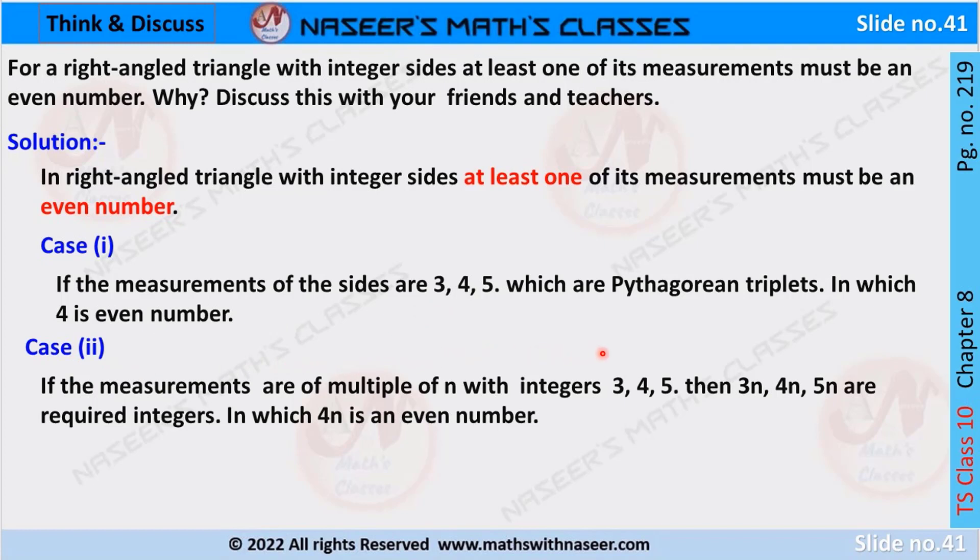Case 2: If measurements are multiples of n with integers 3, 4, 5, then 3n, 4n, 5n are required integers, in which 4n is an even number.